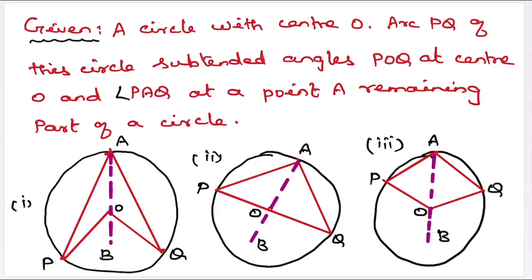To prove this, we consider three cases. One is: arc PQ is minor. Then, arc PQ is a semicircle. And the third one is: arc PQ is major.